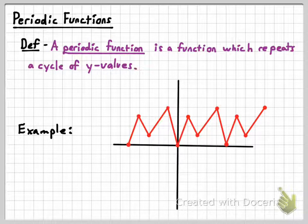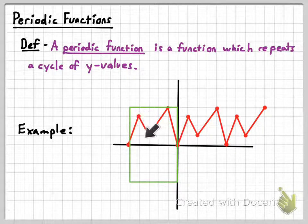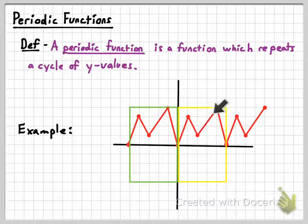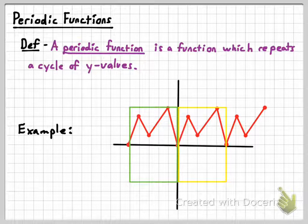What you're going to notice is that this graph repeats itself when you look at it in sections. Look within this green box — the y values start at zero, go to three, go back down to one, go up to four, and go back down to zero. Then that whole process starts over again: zero, up to three, down to one, up to four, down to zero. It just keeps repeating and repeating.